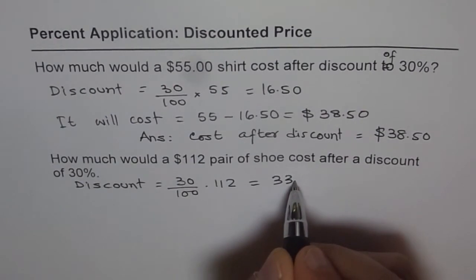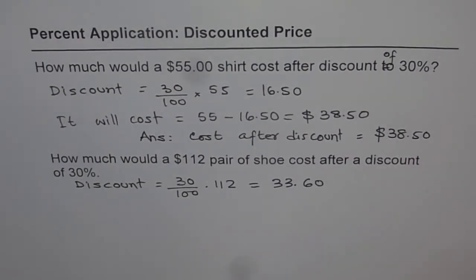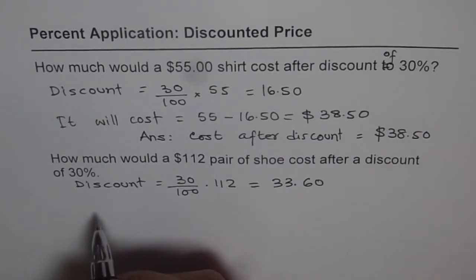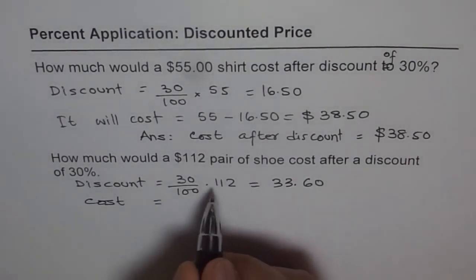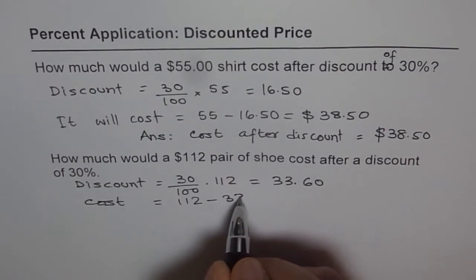Now if you have a discount of $33.60 on $112, what is the cost being paid? You will pay how much? It will cost you $112 minus $33.60.